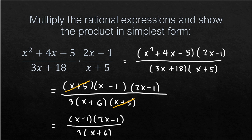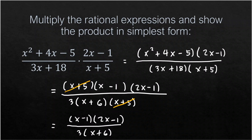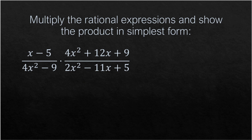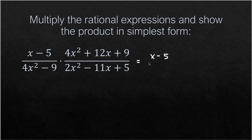Our last example in multiplying rational expressions: (x-5)/(4x²-9) times (4x²+12x+9)/(2x²-11x+5). We factor before multiplying. The term x-5 is prime and cannot be factored. The expression 4x²-9 is a difference of two squares — (2x)²-(3)² — so it factors as (2x+3)(2x-3).